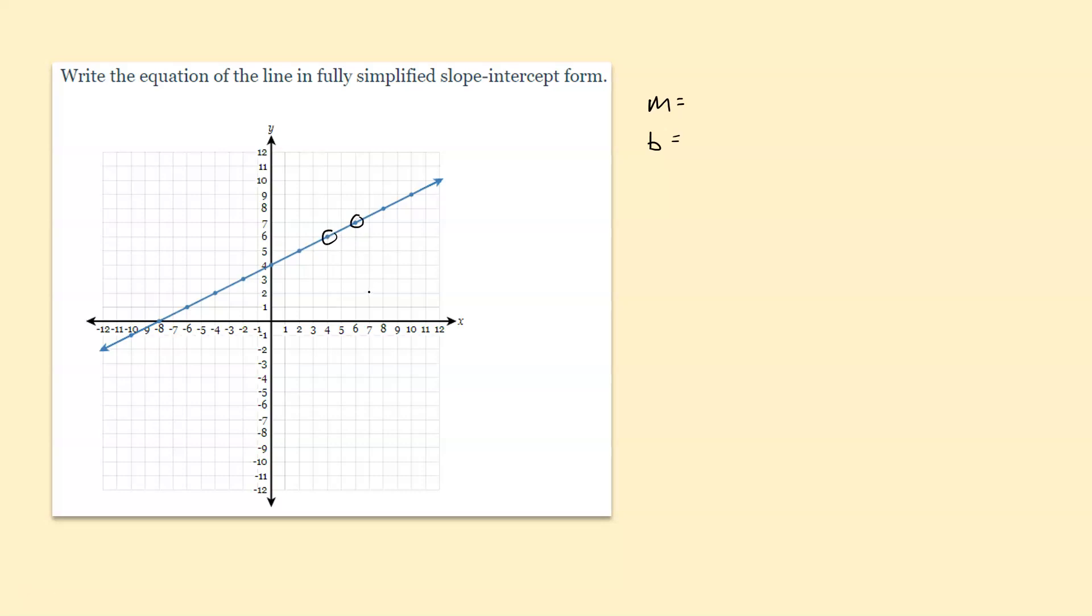So like this point and this point and count the rise over run. So in this case we rise 1 run 2. So our slope would be 1 over 2.